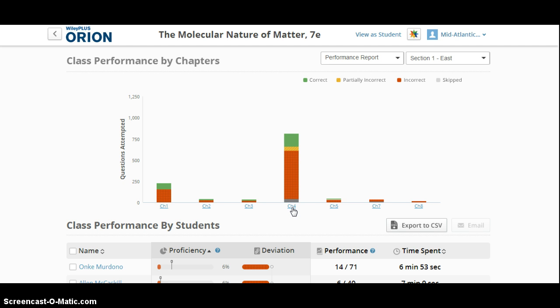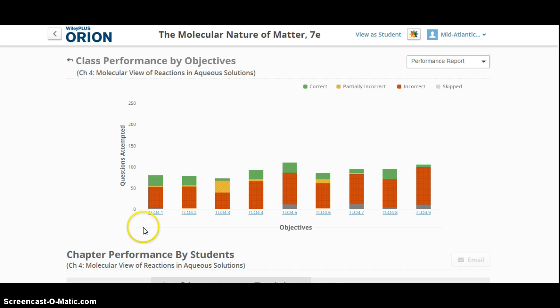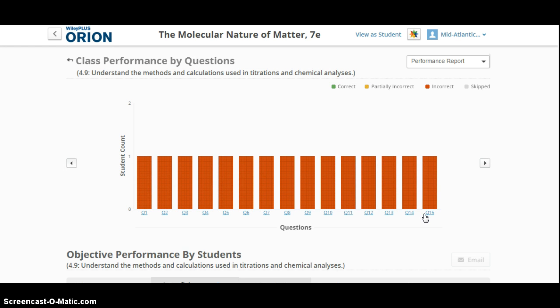If you wanted to drill down further into the specific chapter, you can click on the chapter, and then you are brought to the specific objectives associated with that chapter. You can see here that the objective 4.9, which, if clicked on, shows that every single question attempted was answered incorrectly.